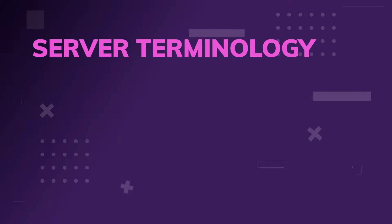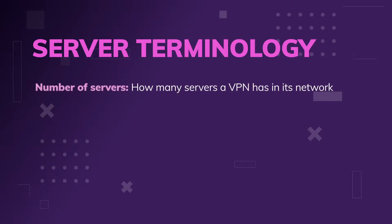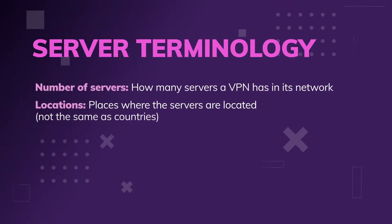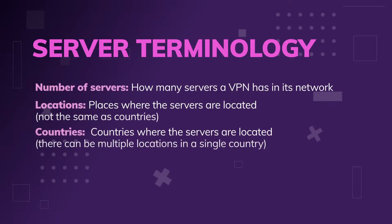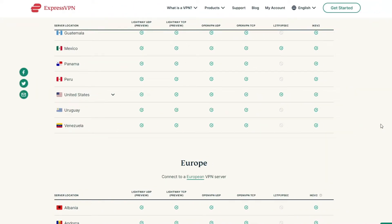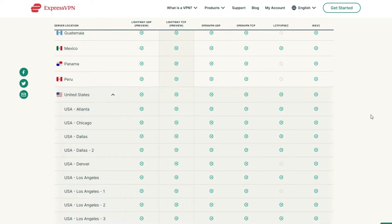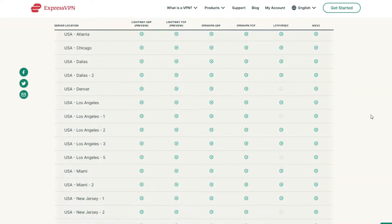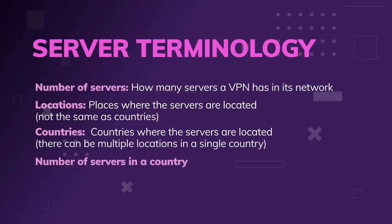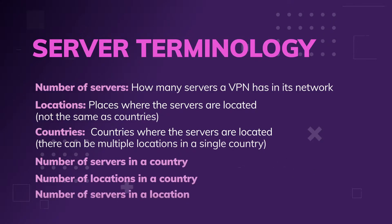Let's talk about server terminology, because access is all about servers. The number of servers is how many a VPN has in its network overall. Locations is where servers are located — that's not the same as countries they have service in. There can be multiple server locations in a single country, which is typically the case for the US. There's also the number of servers in specific countries, and sometimes the number of locations in specific countries. A single location can have a whole bunch of servers.